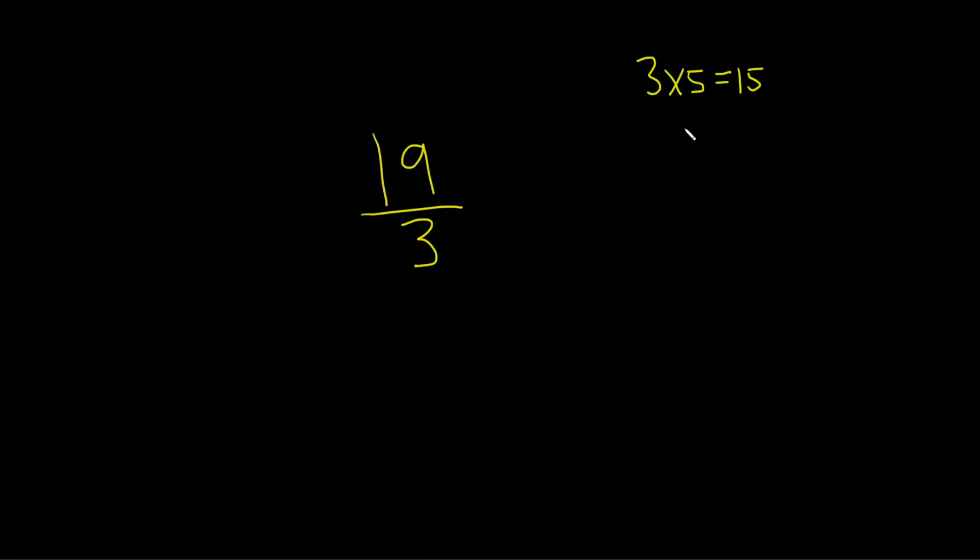But does it go in more? What's 3 times 6? Well, that would be 18. It's pretty close to 19. If we do 3 times 7, though, what happens is we've gone too far. That's 21. So that's no good.